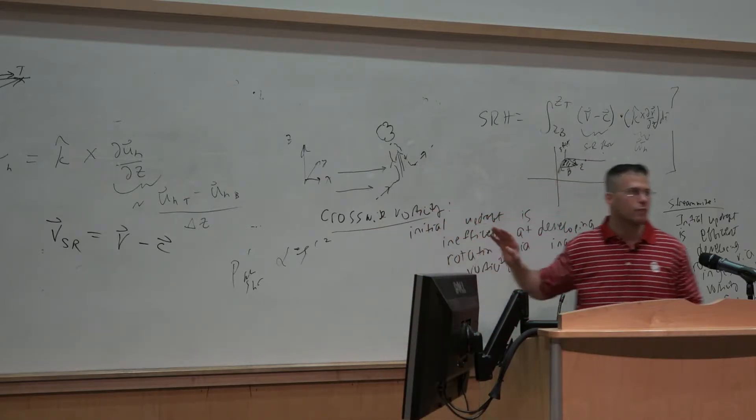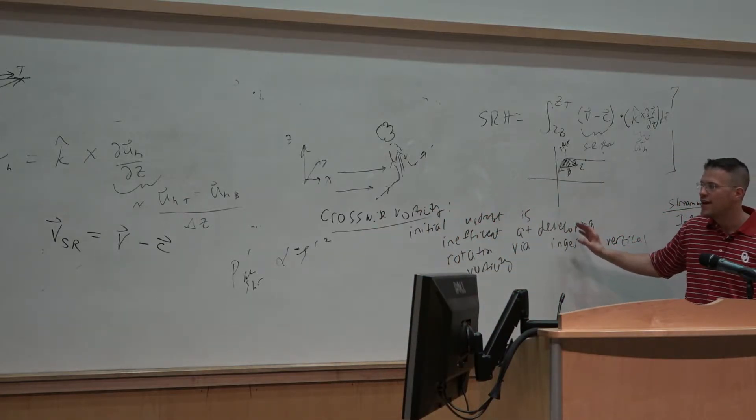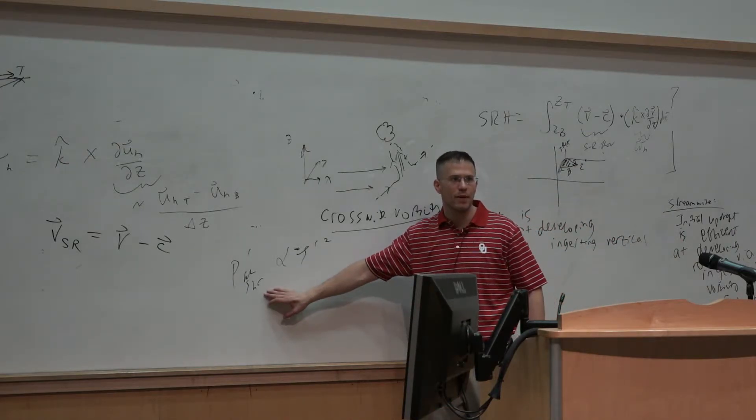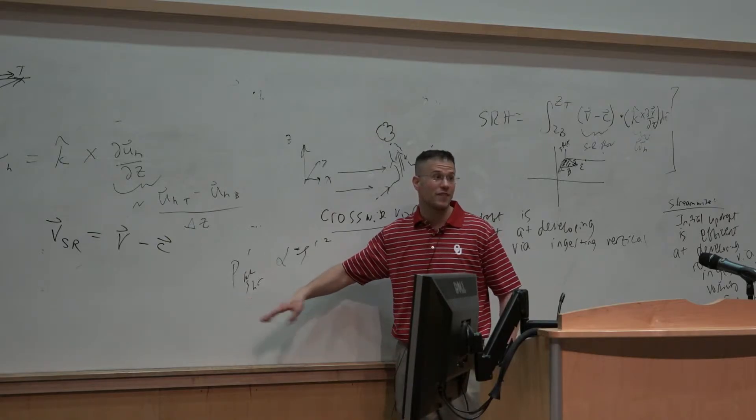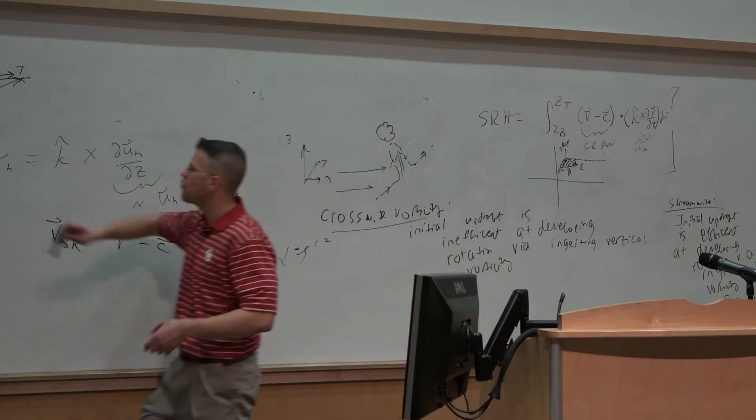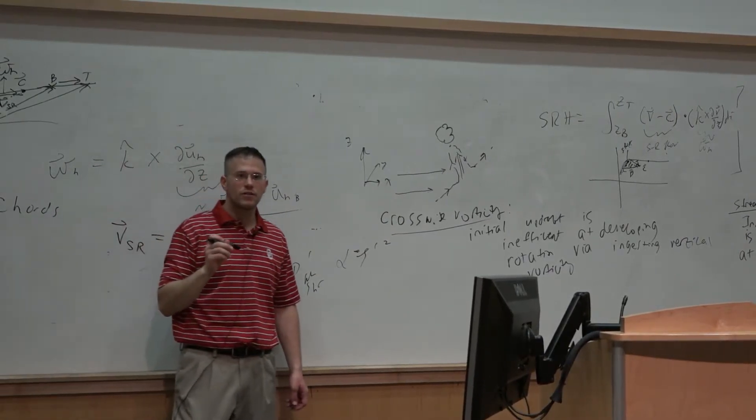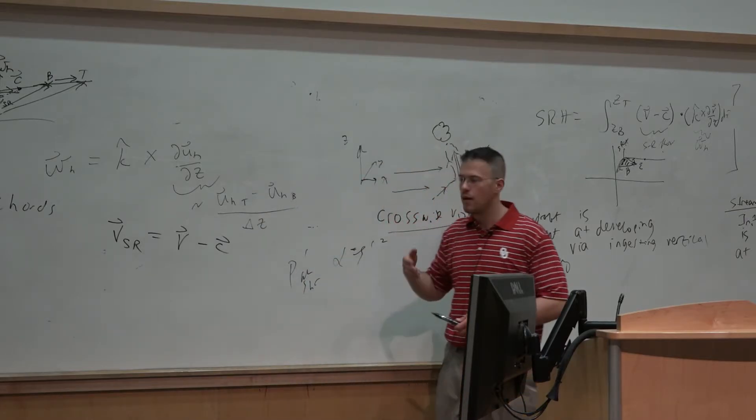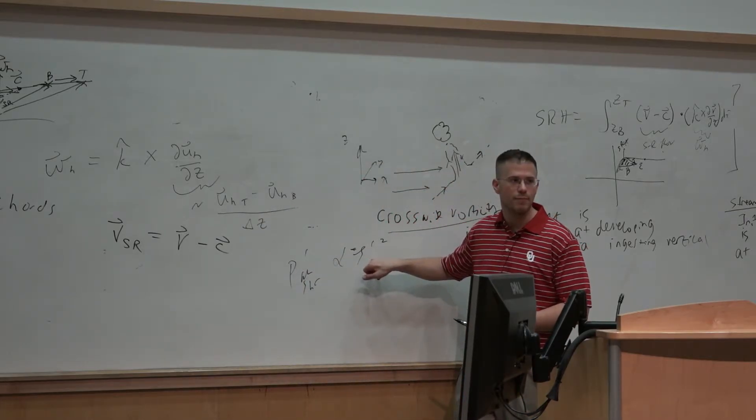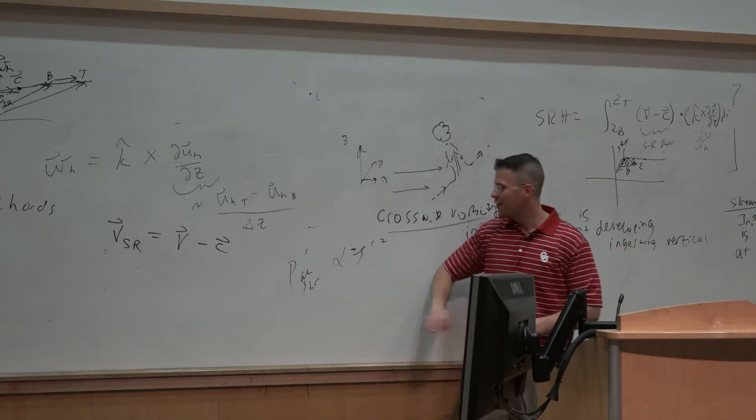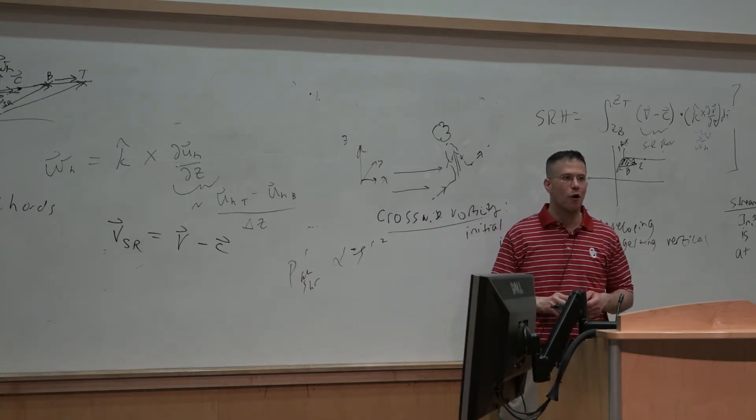So, everything we've talked about with streamwise vorticity and crosswise vorticity is actually related to our nonlinear perturbation pressure term associated with shear, effectively the vertical shear effects. It's that vertical shear and how it's distributed in the environment, whether we have the hodograph curvature or not, that is going to be associated with the potential ingestion into the vertical in support of this zeta prime that then translates to perturbation pressure deficits. So actually, these things are all related to one another through this nonlinear shear term over here.